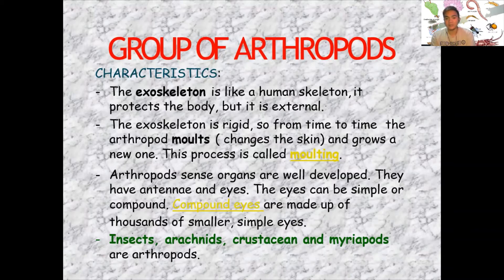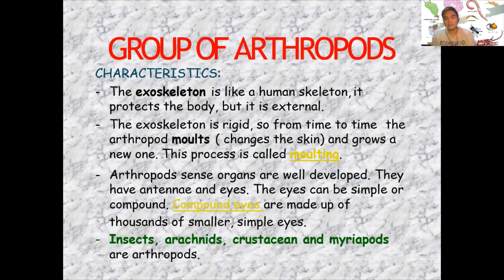Arthropods have well-developed sense organs. They have antennae and eyes. The eyes can be simple or compound — compound eyes are made up of thousands of smaller simple eyes. Insects, arachnids, crustaceans, and myriapods are examples of arthropods.